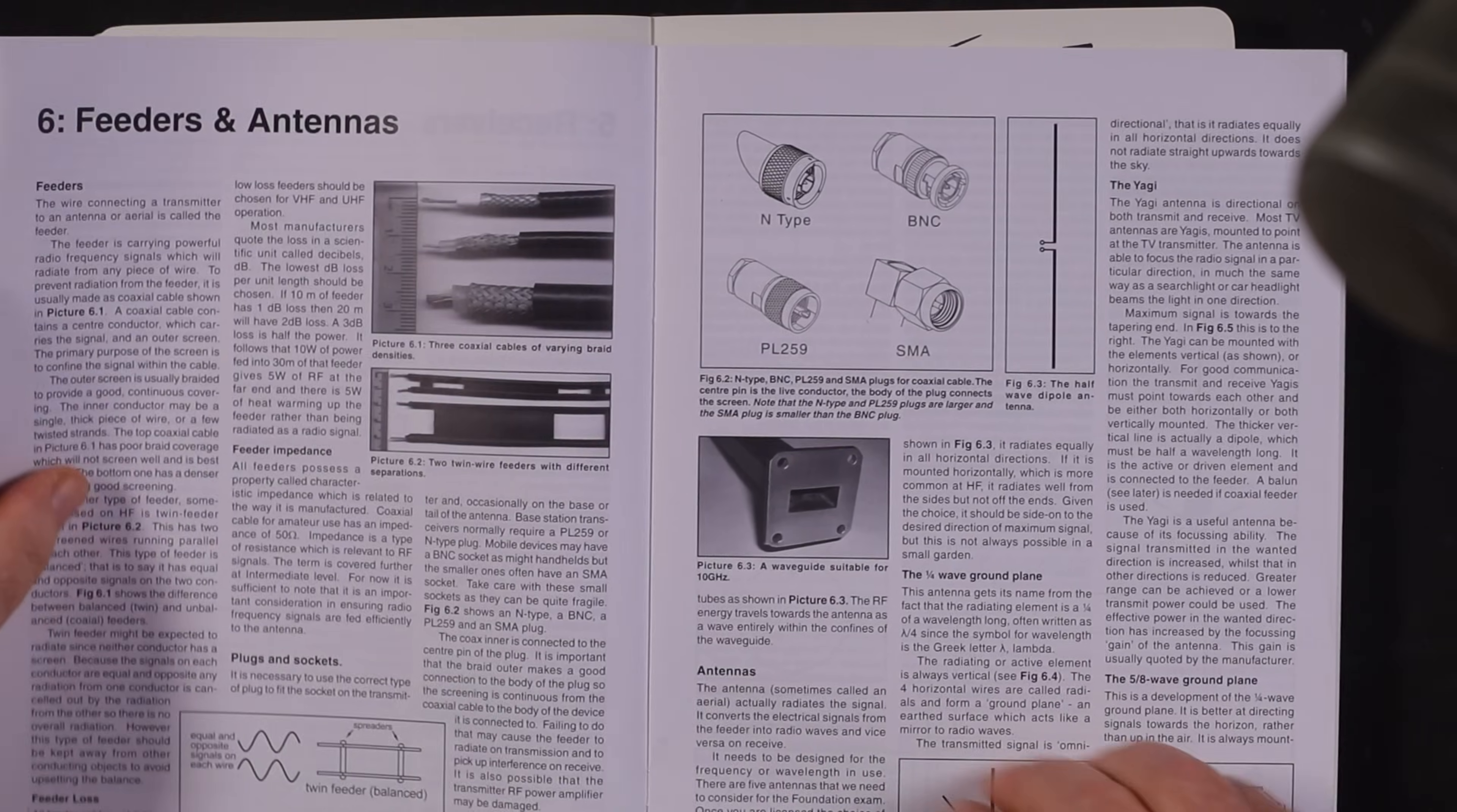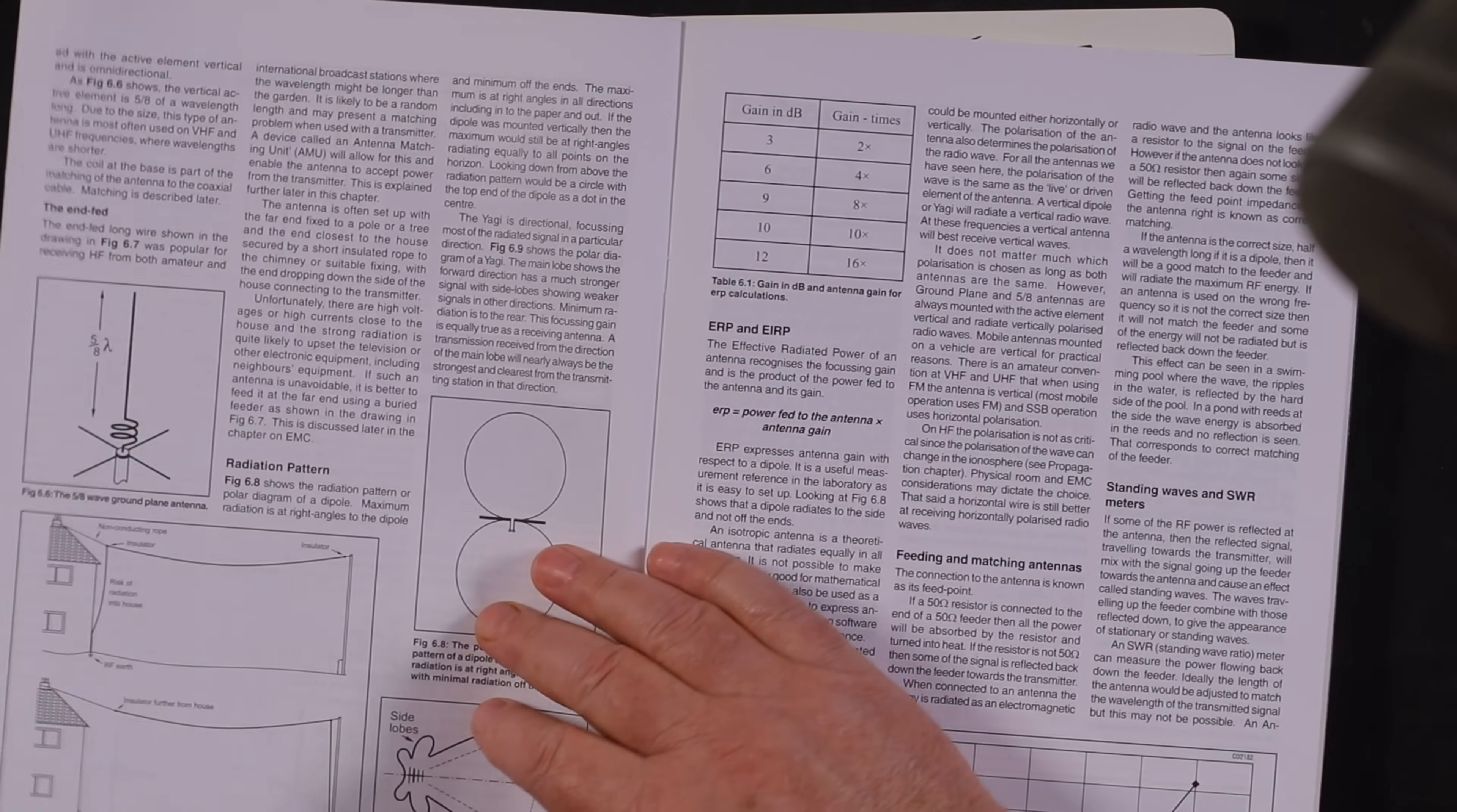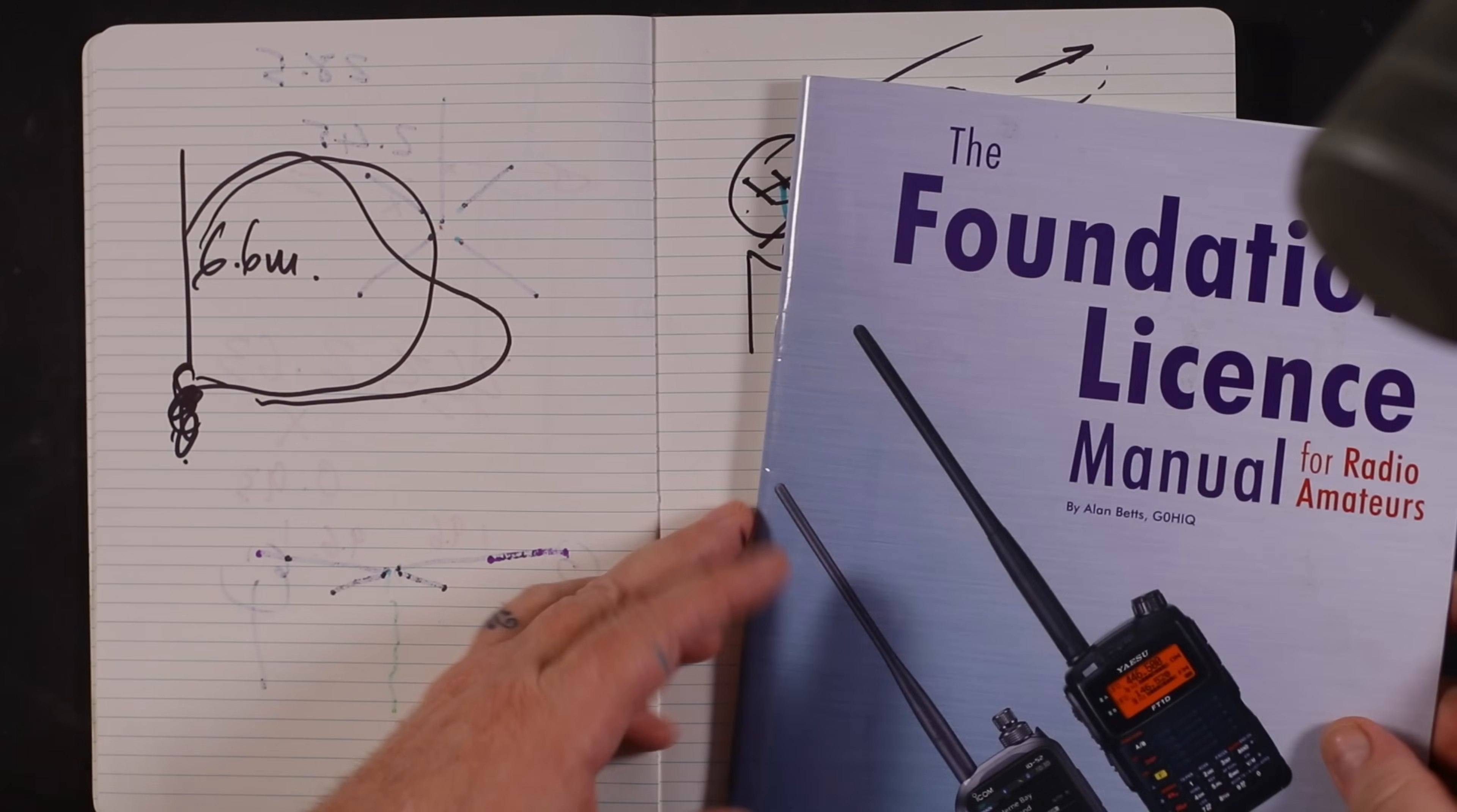Very often we're after more gain lower down. The lower down you can get the pattern, the further your RF will go because we don't want to transmit straight up unless we're talking to the space station. So we've done quarter wave, five-eighths, Yagis.